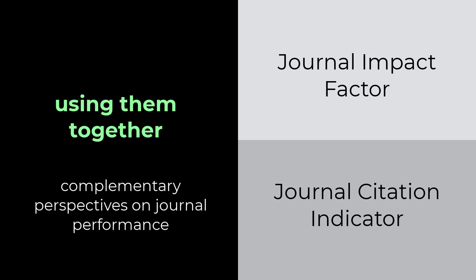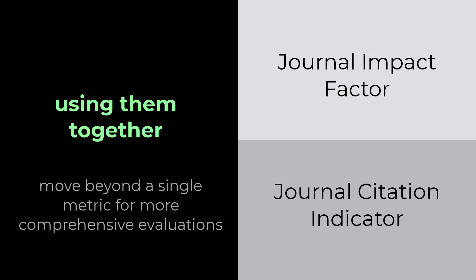The Journal Impact Factor and Journal Citation Indicator provide complementary perspectives on a journal's performance, so it makes sense to use them together in your evaluations. Move beyond a single metric for more comprehensive journal evaluations.